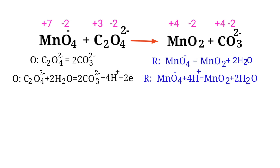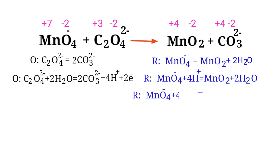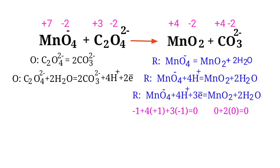Now balance the charges in the reduction half reaction. Both sides are not equal, so add three electrons to the left side to make it equal to zero. Now the addition of charges is equalized in the reduction half reaction.